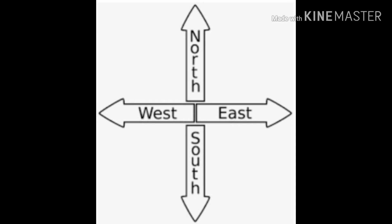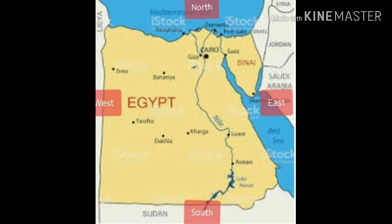In the map, we have north, south, east, and west. In the north of Egypt, we have the Mediterranean Sea. In the south, we have Sudan. In the east, we have the Red Sea. In the west, we have Libya.